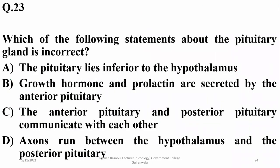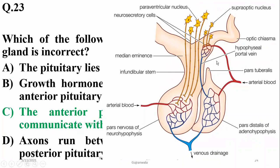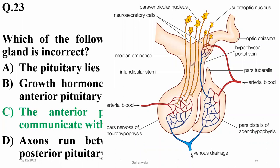Which statement about the pituitary gland is incorrect? The anterior and posterior pituitary glands do not communicate with each other. The pituitary lies inferior to the hypothalamus. Growth hormone and prolactin are secreted by the anterior lobe. Axons run between the hypothalamus and the posterior lobe — that's why it's also known as the neurohypophysis. There is no communication between anterior and posterior lobes, so C is the right option.